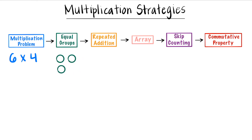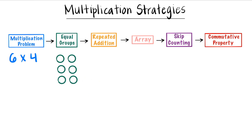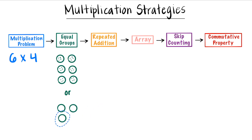Let's go ahead and draw that out. Now that we have six groups we need four dots inside of each one, that way they're equal groups. Or we can do four equal groups with six dots inside of each one. Now we can add six dots to each one so we can have four equal groups of six. Once you count up the dots you know the product of six times four is 24.